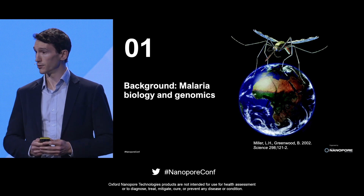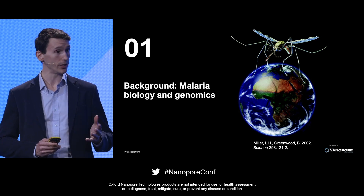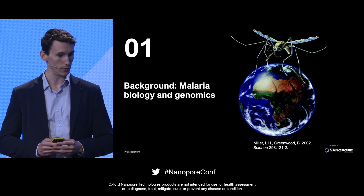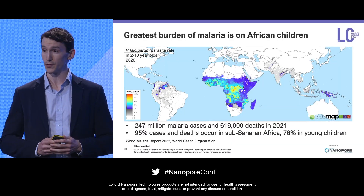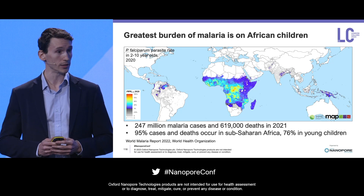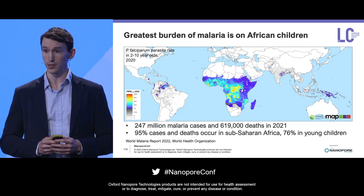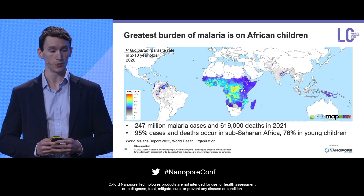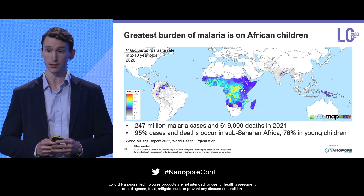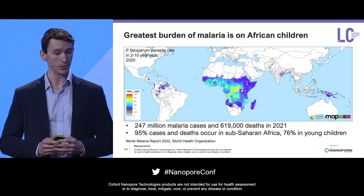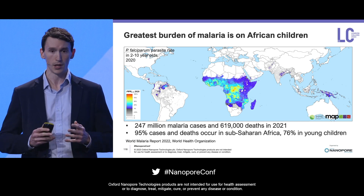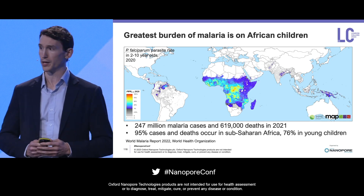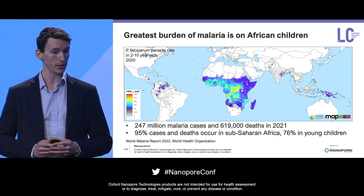So some background on malaria. Malaria is a single cell parasite that is transmitted by the bite of the female anopheline mosquito. It has its greatest impact on children living in sub-Saharan Africa. The World Health Organization estimates that there were 247 million malaria cases and 619,000 deaths in 2021. 95% of those are in sub-Saharan Africa, and around four in every five are in children under the age of five.